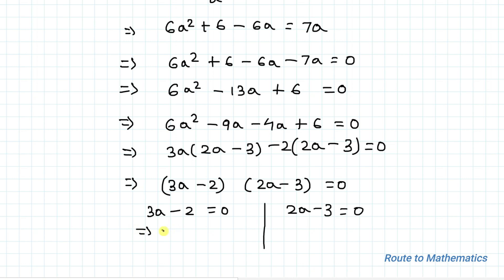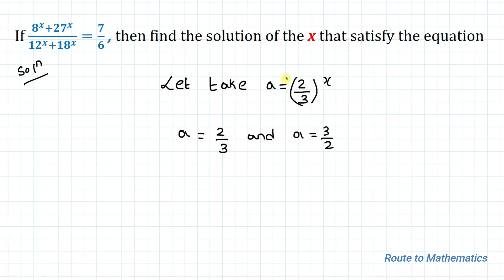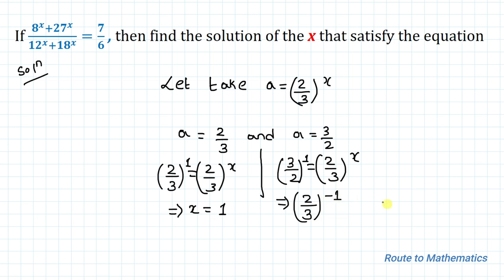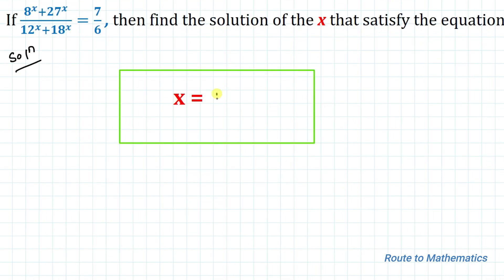From 3a minus 2 equals 0, we get a equals 2 by 3. From 2a minus 3 equals 0, we get a equals 3 by 2. Substituting back, since a equals 2 by 3 to the power x: for a equals 2 by 3, we get x equals 1. For a equals 3 by 2, we need the reciprocal so the base becomes 2 by 3 to the power negative 1, giving x equals minus 1. Thus our solutions are x equals plus 1 and x equals minus 1.